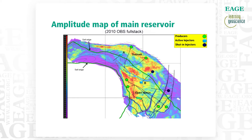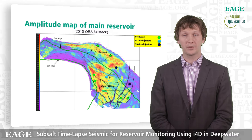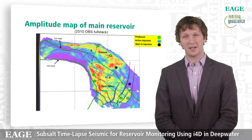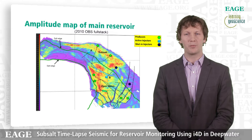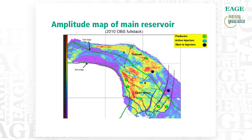Here's an amplitude map of the main reservoir into which we're injecting water. In the southern part, injector B is supporting producers up-dip against the salt, with some fault closure on the southern flank. On the northern side, injector A supports its own producers, again closed up against the salt. You can see the salt edge — most of the northern field is really tucked up against it, creating a really challenging imaging problem and one of the reasons we had to take great care planning the survey.